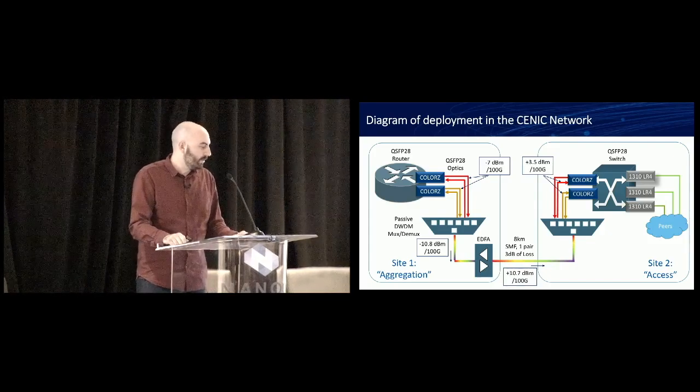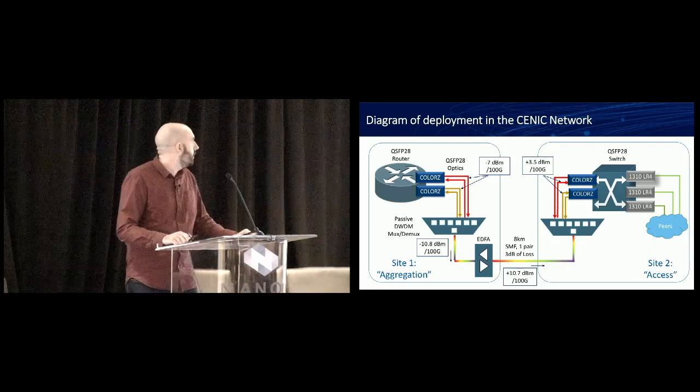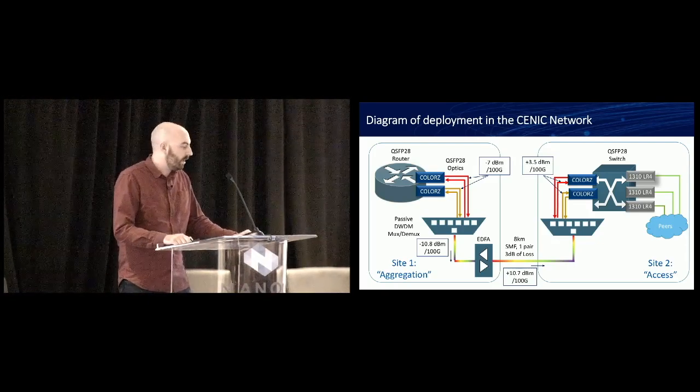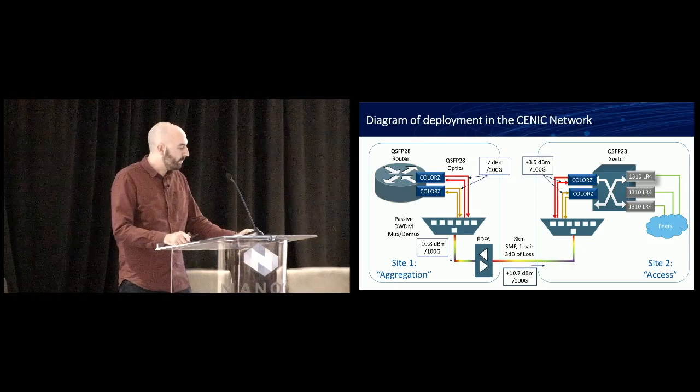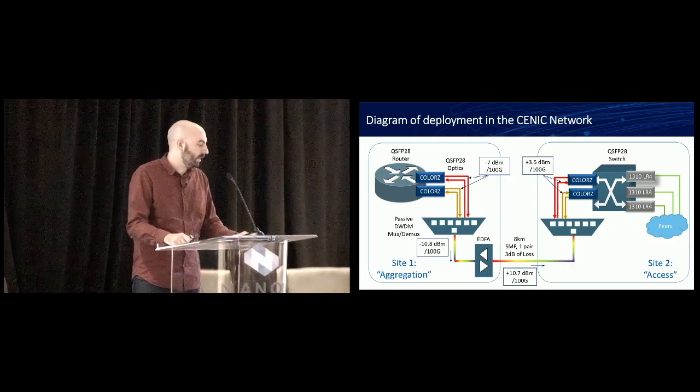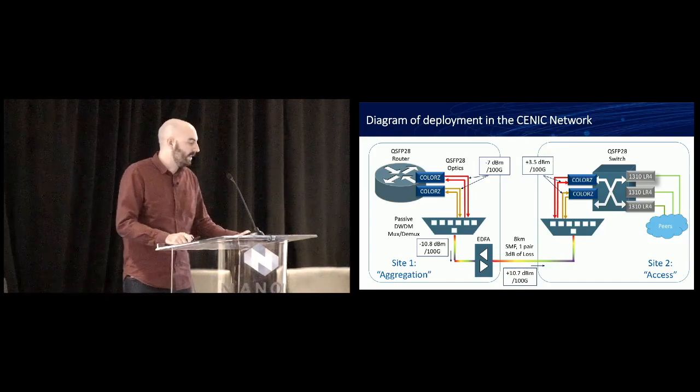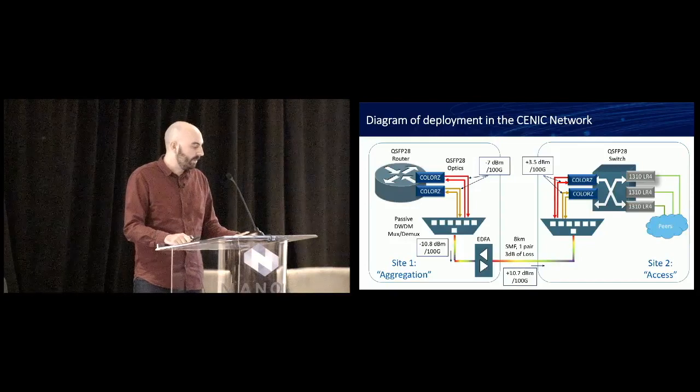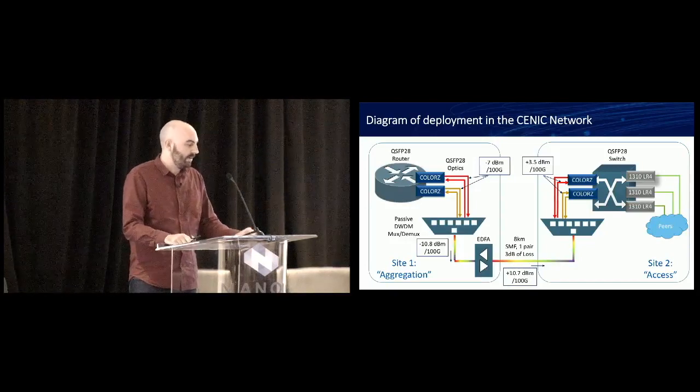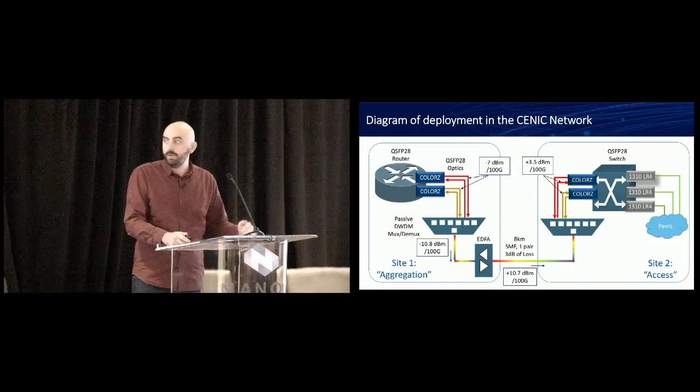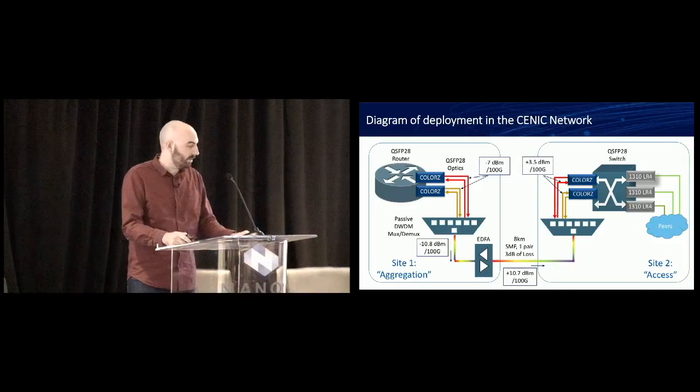One thing I wanted to point out on here was the launch power specifically. You see it comes out of the optics there at negative 7 dBm per channel, per 100 gig pluggable. So you have to be intentional with your power levels when you're deploying these. As it went through the mux, you get to negative 10 dBm per 100 gig. After the amplifier, it's a positive 10. And dropped down to the optics on the other side, it's positive 3.5. So you had to boost that up pretty high to get that to function across there.